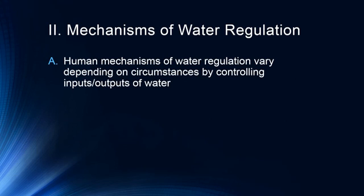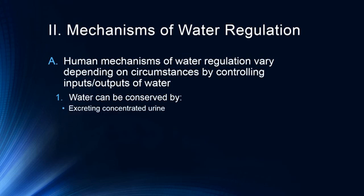How does the human body regulate water? Human mechanisms of water regulation vary depending on circumstances by controlling mostly the input and output of water — either trying to increase input through thirst or by increasing output through urination. Water can be conserved by excreting concentrated urine. This is one of the reasons why service members in the Army and Marine Corps, when in very hot climates such as the desert, are told to keep drinking water so that their urine is constantly clear. Clear urine means it's not concentrated, and concentration is a sign of potential dehydration. You don't want to decrease sweat, because decreasing sweat results in an increase in body temperature.